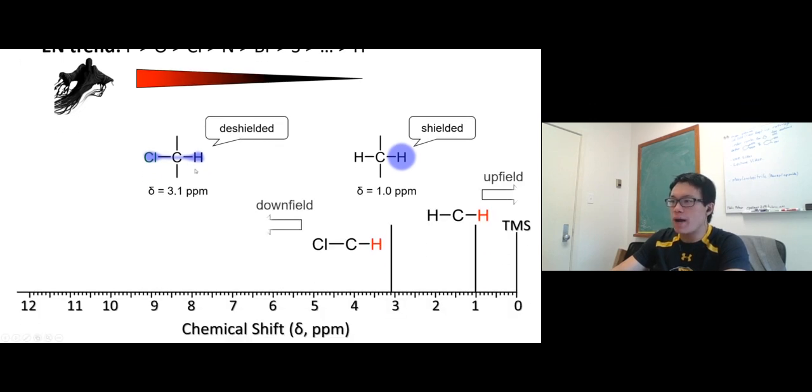If you look on the spectrum, the one that's next to the chlorine is going to be more deshielded and upfield - downfield. On the right side, the right proton is just a regular hydrocarbon, shows up upfield, shielded.